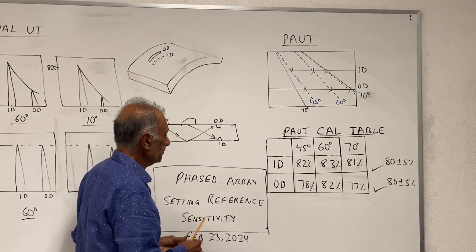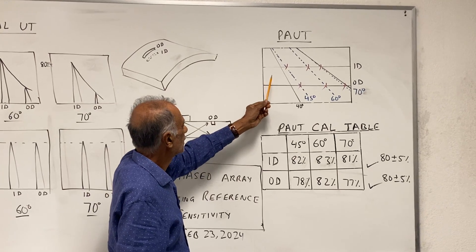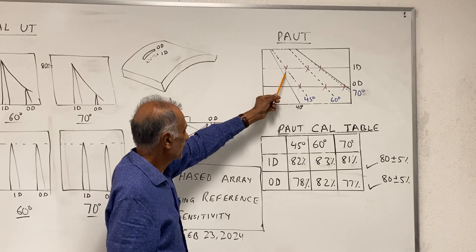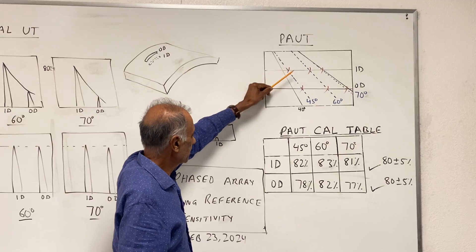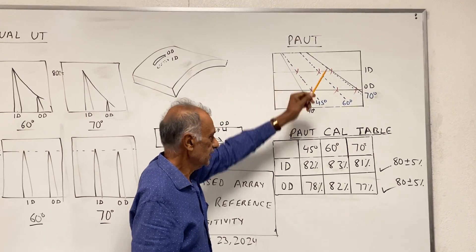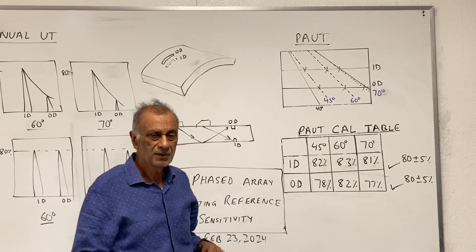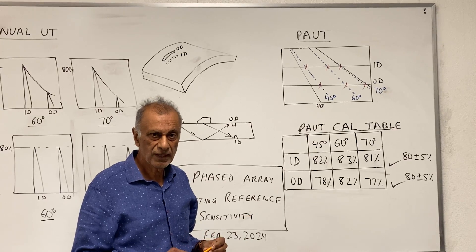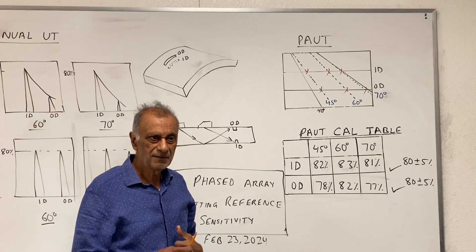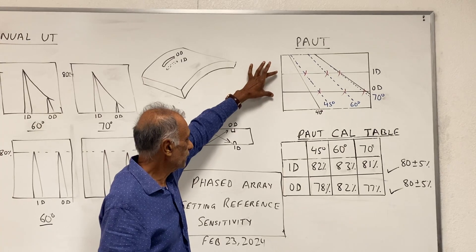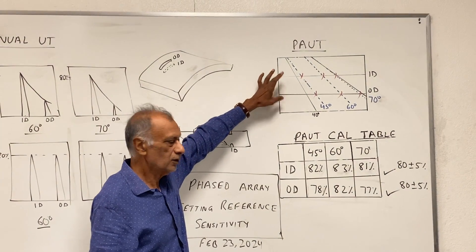So when we are doing this calibration, we have to equalize these signals coming at 45 degrees, 60 degrees, and 70 degrees. All of them should be 80% AD plus minus 5, and once we do that for the ID, it has to be done for the OD.